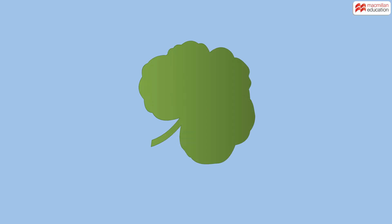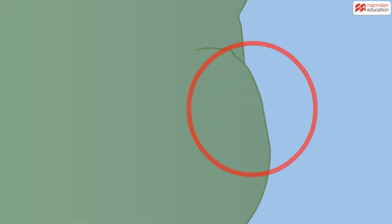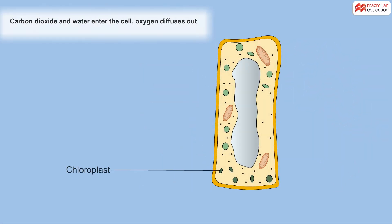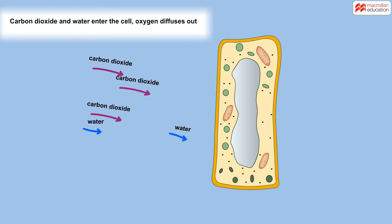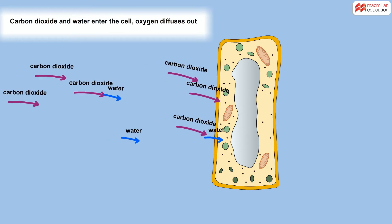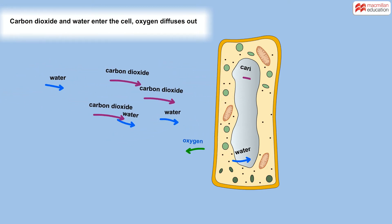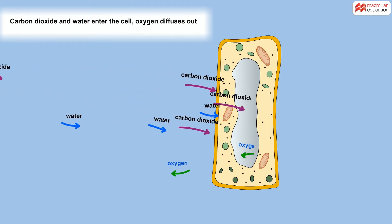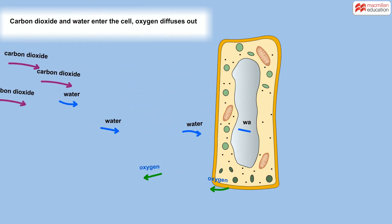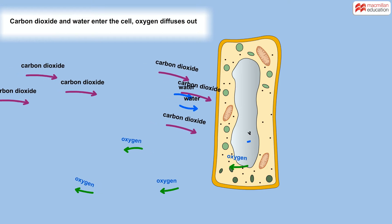If we microscopically examine a leaf, we see it contains cells rich in chloroplasts near the surface. Chloroplasts, using light from the sun for energy, combine the carbon dioxide with water to make sugar.